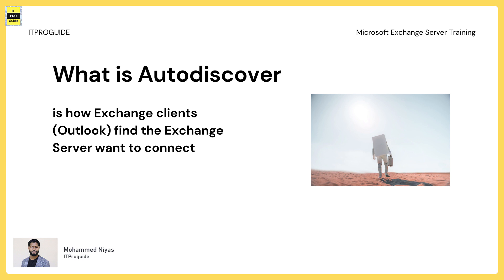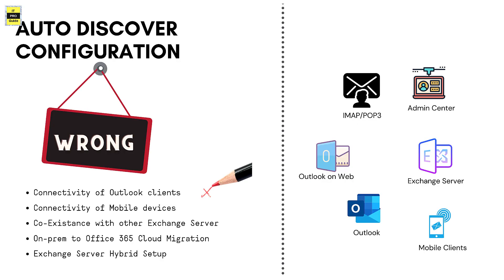In simple words, Auto Discover is the way clients find the Exchange server they want to connect to. Client devices like Outlook, mobile devices, and devices using IMAP or POP3 to connect to Exchange Server depend very much on the Auto Discover configuration. Auto Discover is linked to almost all parts of your Exchange server architecture, so if your Auto Discover configuration is wrong, it is going to affect everything from normal connectivity to migration interruptions.